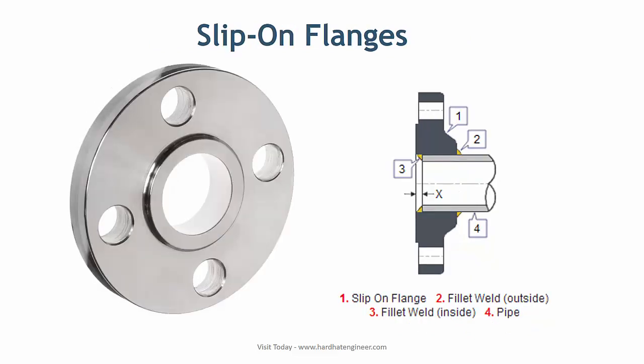Slip-on flange has a hole with a matching outside diameter of the pipe, through which the pipe can pass. The flange is placed on the pipe and fillet welded from both inside and outside. Slip-on flange is suitable for low pressure and temperature applications. This type of flange is available in large sizes also, to connect big bore piping with storage tank nozzles or any equipment nozzle.